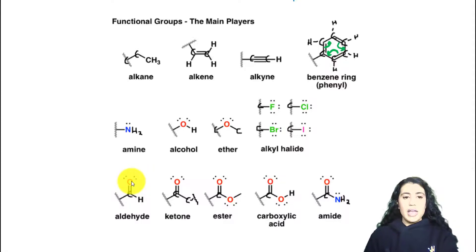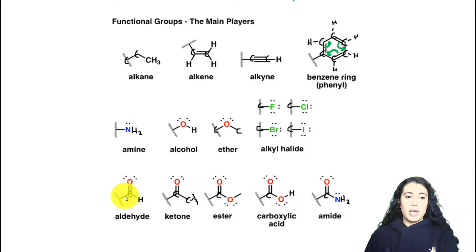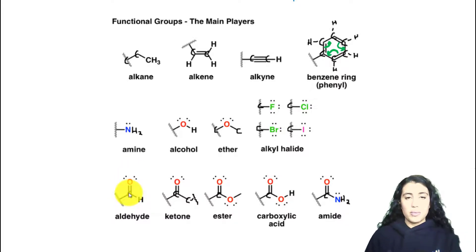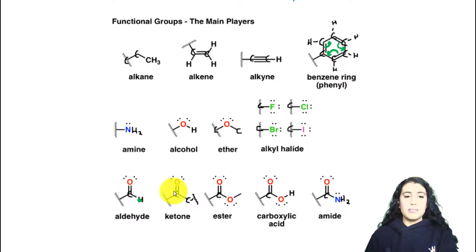If we just have an aldehyde, that means we have whatever carbon chain and this group is on the last possible carbon. So if you see a carbonyl group at the very end of the carbon chain, we call that an aldehyde — on one side it's just bound to a hydrogen.